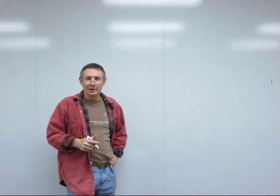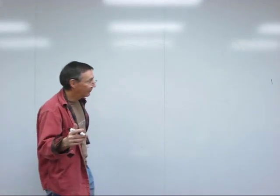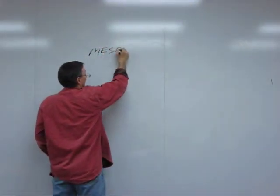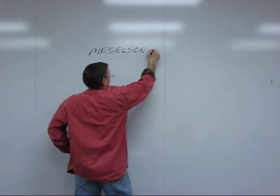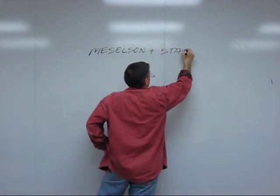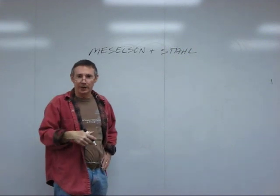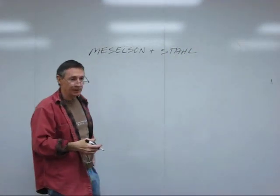We're going to talk about cesium chloride density gradient centrifugation. This is a technique that was invented by Meselson and Stahl for their experiments where they tested hypotheses about the mode of replication of DNA.